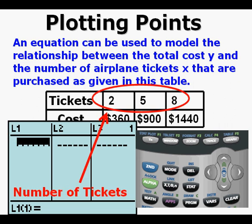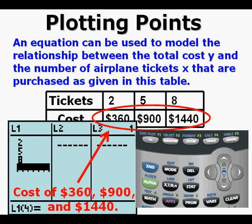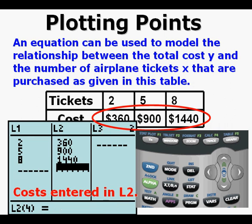Back to our problem. In the top row of the table we see the number of tickets, which is our independent variable. Enter 2, 5, and 8 into List 1. In the lower row, we see the dependent quantities of $360, $900, and $1,440. And here the costs are entered in List 2.